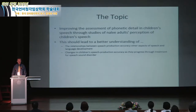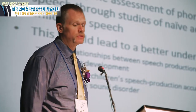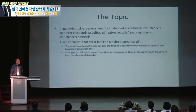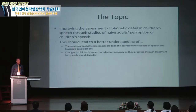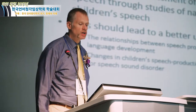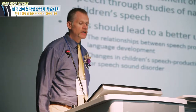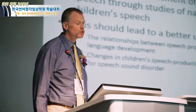The topic of this lecture is how we can better improve our assessment as speech-language pathologists of phonetic detail in children's speech, largely through studies of how adults perceive children's speech. I'd like to convince you throughout this lecture that understanding this topic should lead to a better appreciation of the relationship between speech production accuracy and other aspects of speech and language development, and a better way of measuring how children's speech production accuracy changes as they progress through treatment for speech sound disorder.